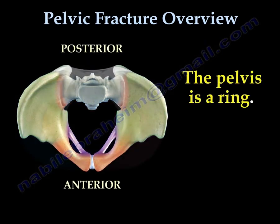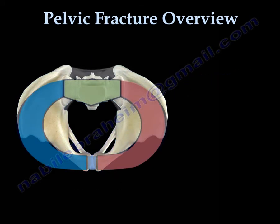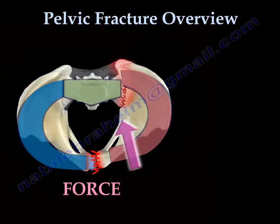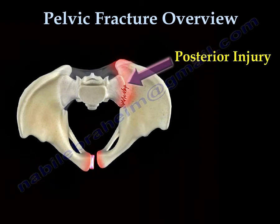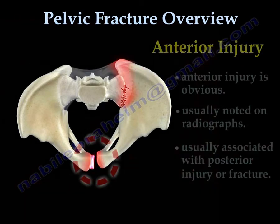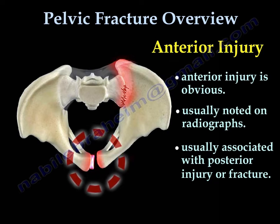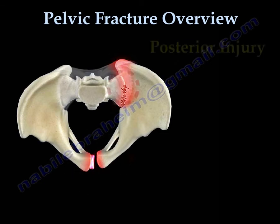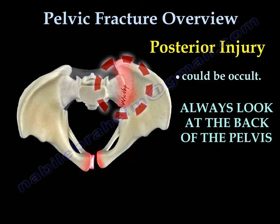The pelvis is a ring. When a force occurs, it will injure the ring in the front and the back — the anterior injury and the posterior injury. The anterior injury is usually obvious and will be noted on radiograph, and is usually associated with a posterior injury or fracture. The posterior injury could be occult. Always look at the back of the pelvis.